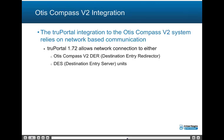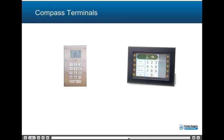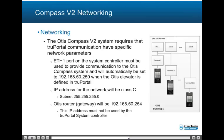The second elevator solution is the Otis Compass V2 integration. The TruePortal integration to the Otis Compass V2 system relies on network-based communication and will be handled by a joint collaboration between the TruePortal installer and Otis Elevator technical installers. TruePortal 1.72 allows network connection to either the Otis Compass V2 DER (Destination Entry Redirector) or the DES (Destination Entry Server) units. The Otis Compass V2 system topology includes a single DES or multiple DES units communicating through a common DER; the DEC is a user terminal at the entrance to a particular elevator or bank of elevators. Networking requires that TruePortal communication use specific network parameters.